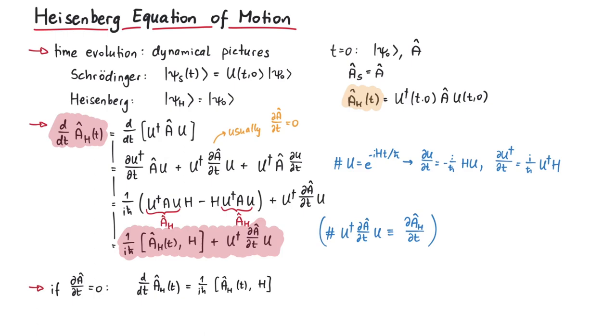If the commutator of some operator with the Hamiltonian is zero, then its time derivative is also zero, which means that this operator is constant in time. And this means that its eigenvalues correspond to conserved quantities.